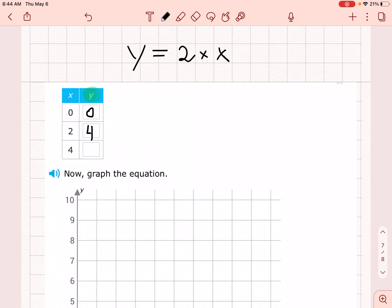So it could be an x, a letter x, but I'm replacing it with the number 4. 2 times 4 is 8. And now we can fill out this table.